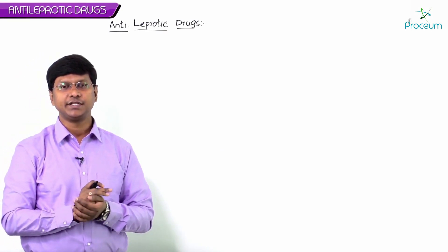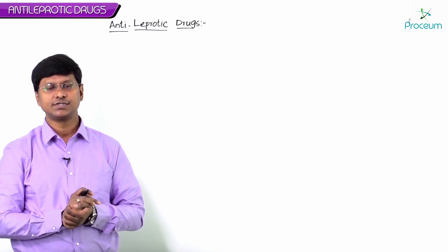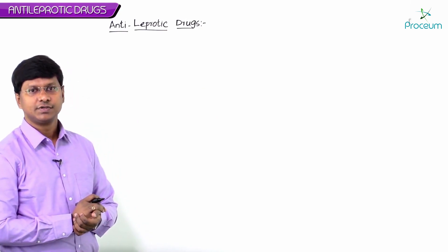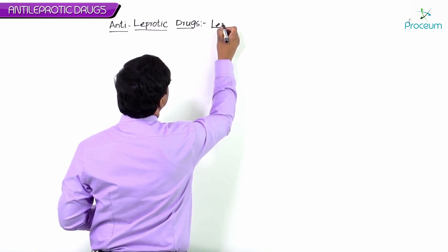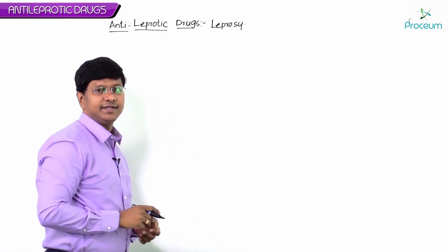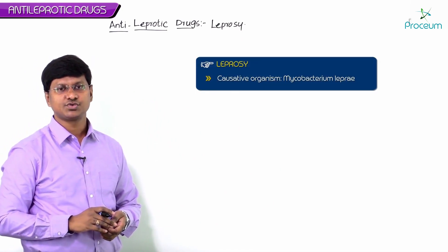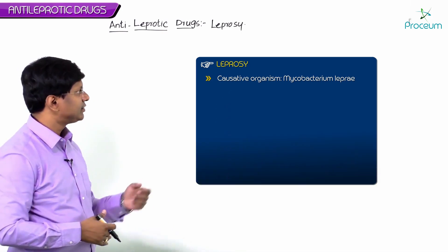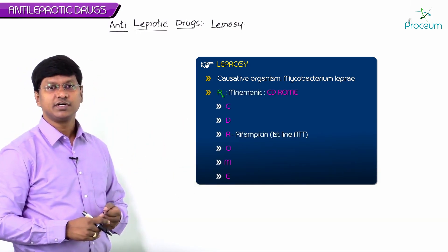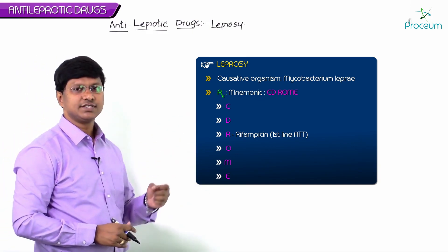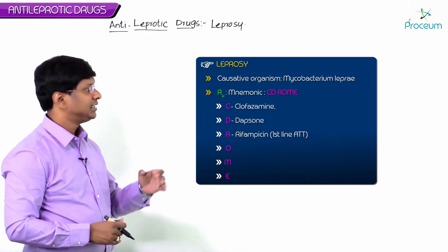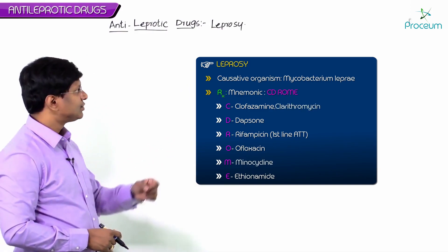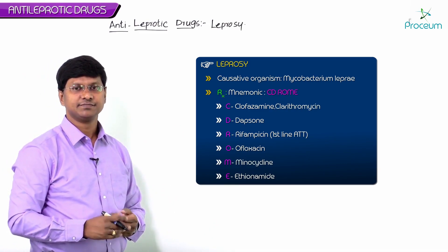Continuing with anti-mycobacterial drugs, let me take up the treatment of leprosy — that is, anti-leprotic drugs. Leprosy is the disease caused by Mycobacterium leprae. The drugs used in the treatment of leprosy include rifampicin, which is also a first-line anti-tubercular drug, along with dapsone, clofazamine, ethionamide, ofloxacin, minocyclin, and clarithromycin.